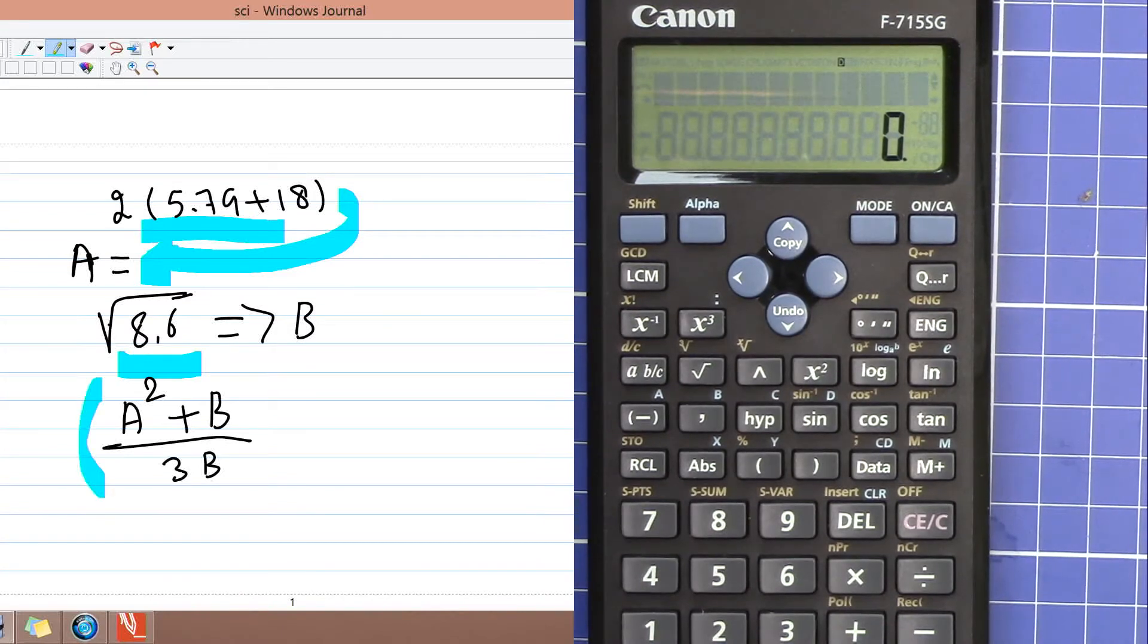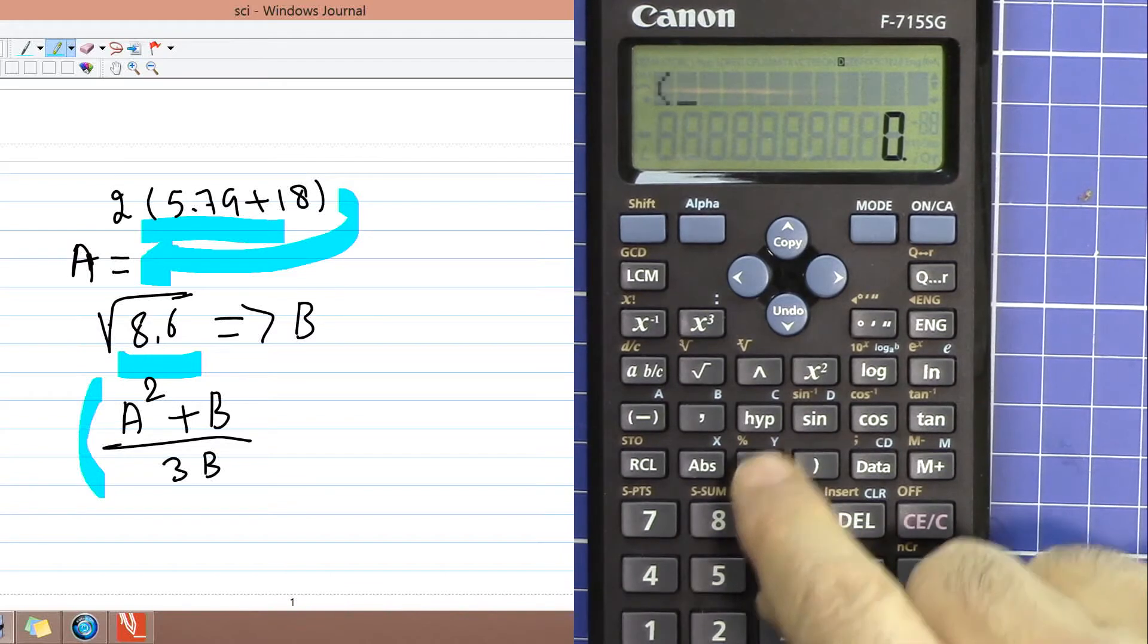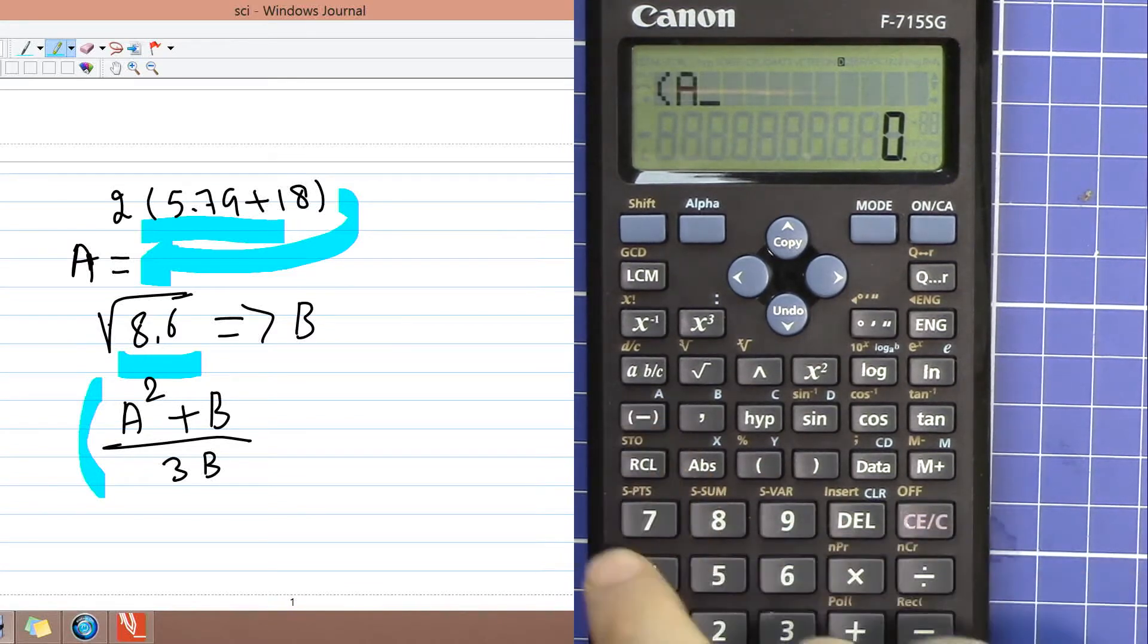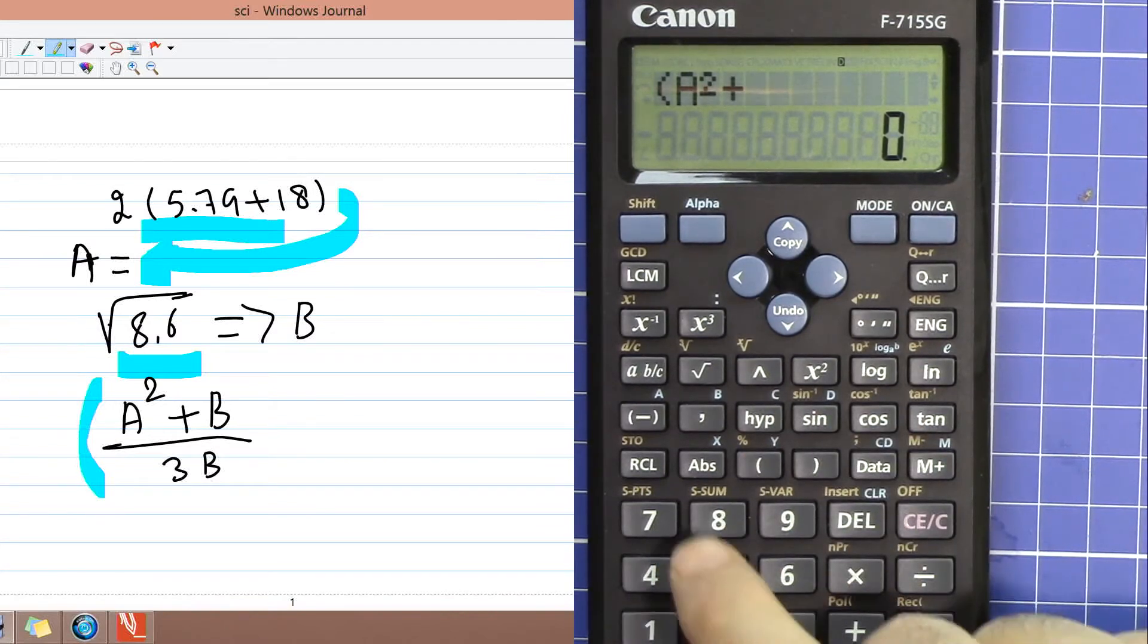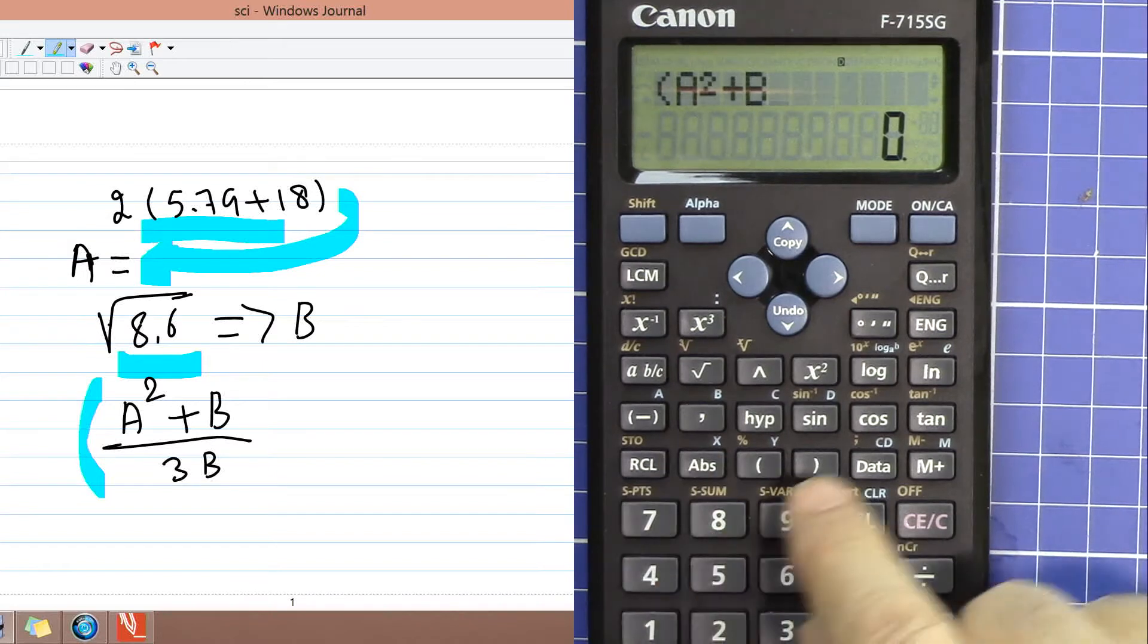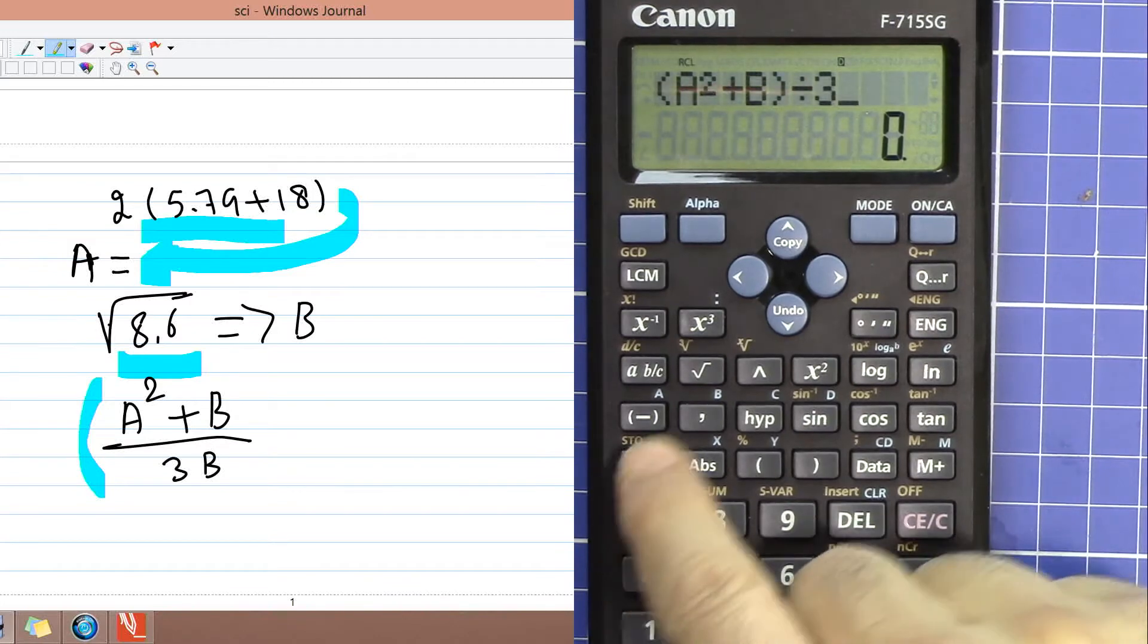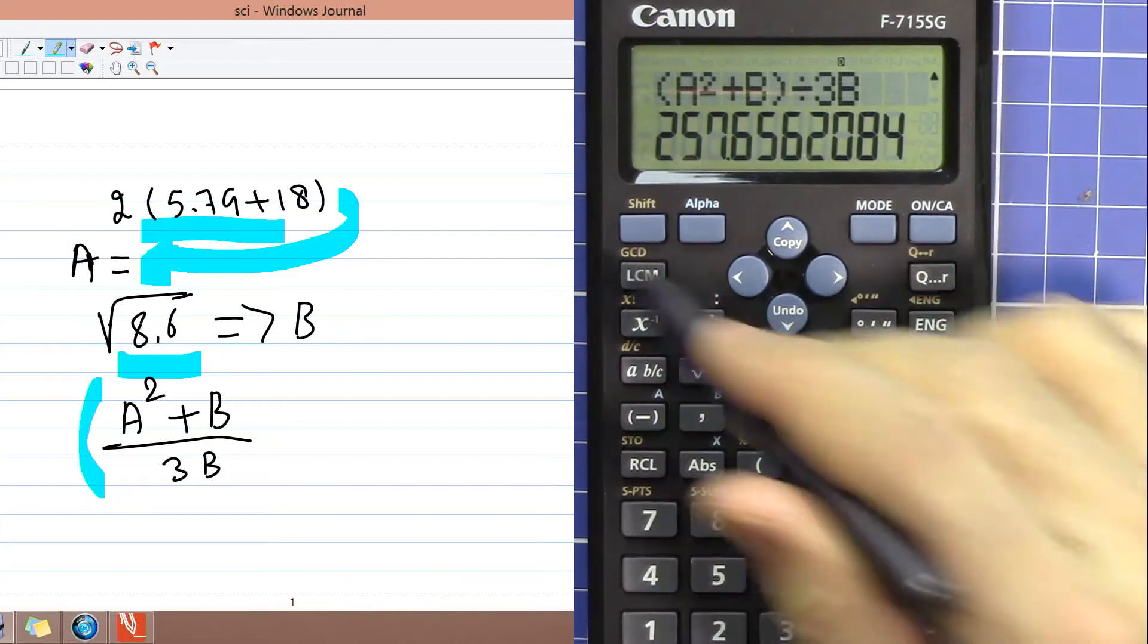I'm going to do this calculation: A squared plus B divided by 3B. So open a parenthesis, shift recall A, and then square, plus recall B, close the parenthesis, divided by 3, and then recall B. So that is the answer.